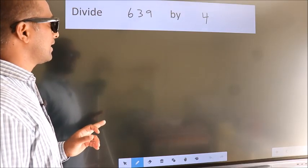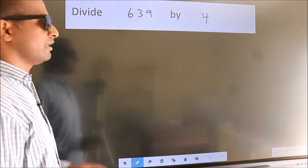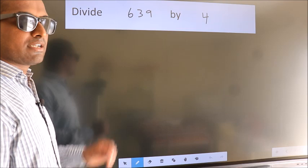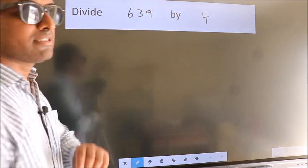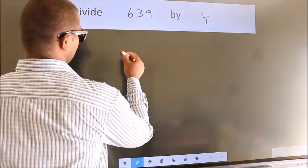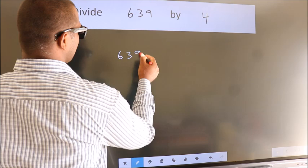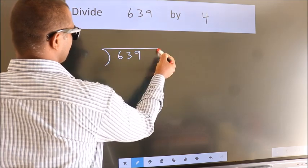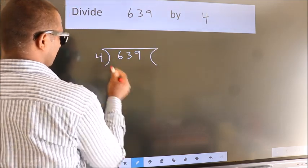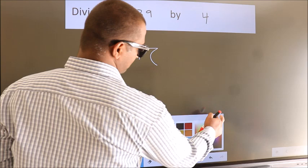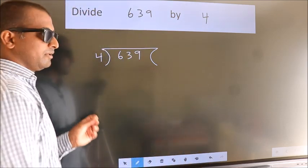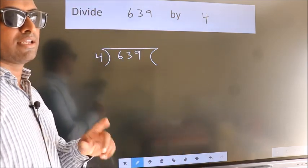Divide 639 by 4. To do this division we should frame it in this way. 639 here, 4 here. This is your step 1. Next.